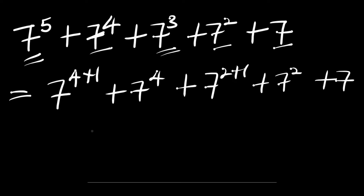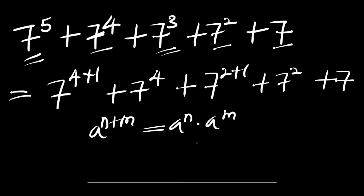Now the next thing we are going to do is to consider this identity: if you have a power m plus n, this equals a power n times a power m. So we apply this identity right here and here.